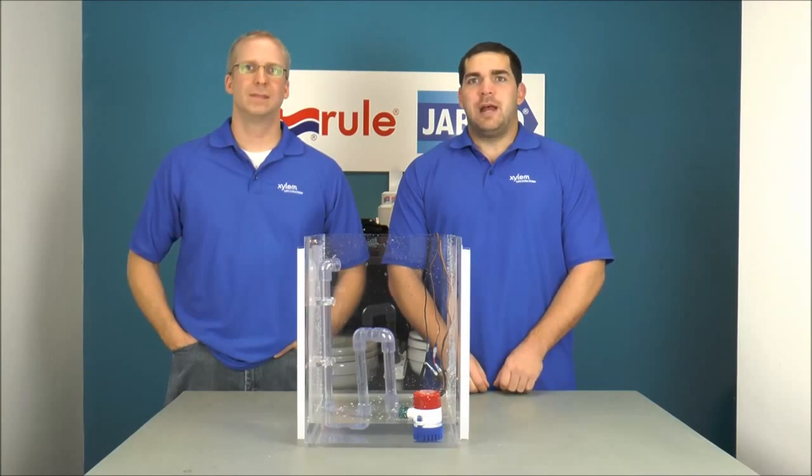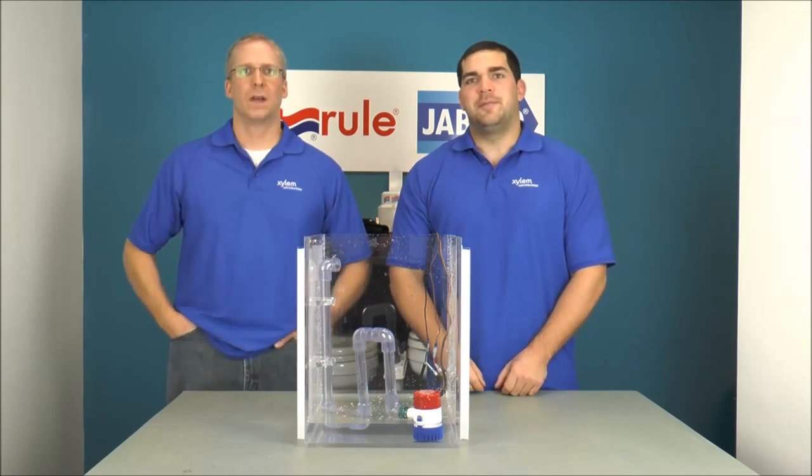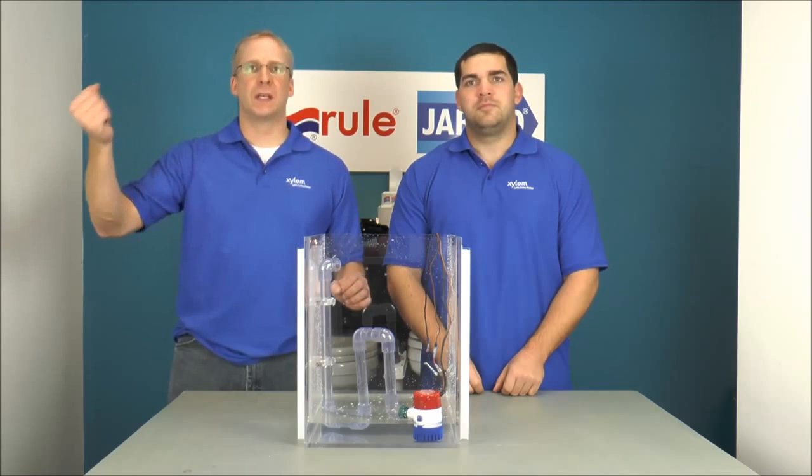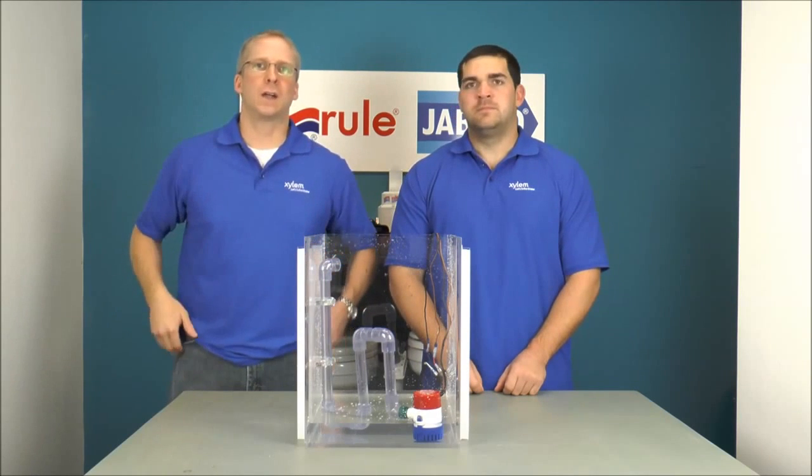So there you have it. We just showed you what happens when your Rule bilge pump has dips and sags in the discharge hose line. Now the big takeaway is run that discharge line continuously upwards. If you have any valleys, that's where water's going to collect and you could cause an air lock.